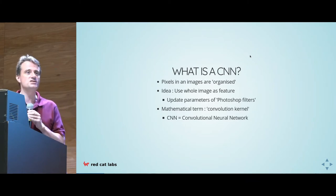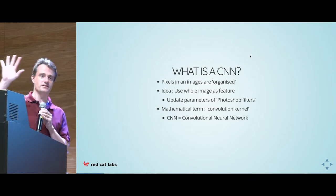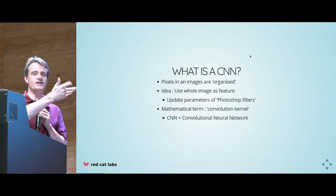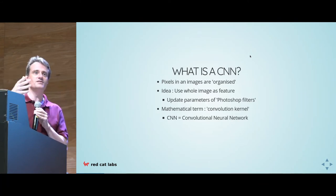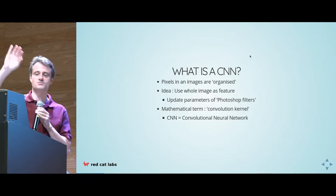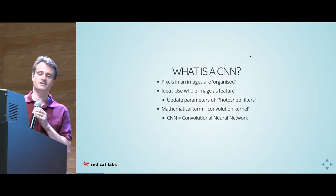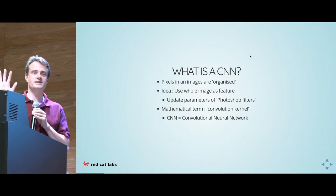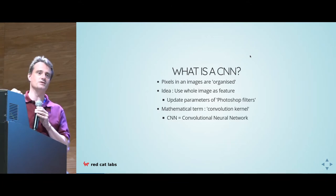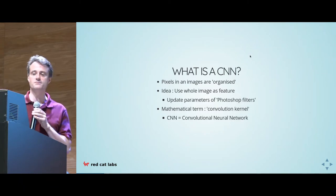What is a CNN, basically? It uses the fact that pixels in an image are organized — they have a kind of layout, a natural relationship with each other, compared to just random inputs from sensors around the world. An image has sensors organized in a grid. The idea is we're going to use the whole image as a feature for the next level of the network, with successive levels making a deep network.